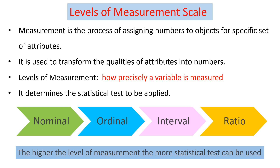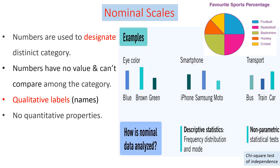The first type is the nominal scale. As the name implies, it is just a designation, a naming, or a nomination for a distinct category. Here, numbers have no values and categories cannot be compared — it is purely qualitative with no quantitative properties. For example, eye color: blue is represented with 1, brown with 2, and green with 3. These numbers cannot be compared; we cannot say 3 is greater than 1 — they are just a nomination or designation.